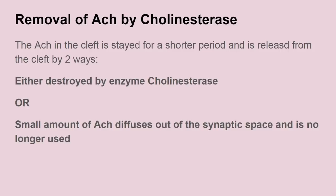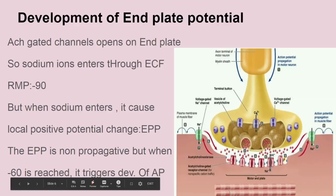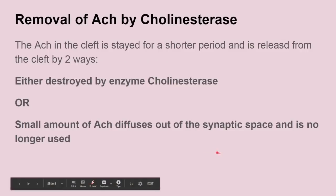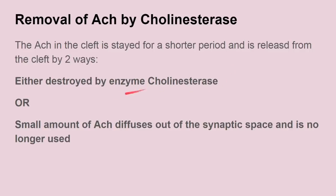The removal of acetylcholine by acetylcholinesterase: the acetylcholine in the cleft remains for a very short period of time, about 1 millisecond only, and is then removed from the synaptic cleft by two ways. Either the acetylcholine is destroyed by the enzyme cholinesterase, which is present in the palisades or junctional folds or subneutral cleft, or a small amount of acetylcholine diffuses out of the synaptic space and is no longer used for muscle contraction. It is very important to know that the rapid removal of acetylcholine from the cleft prevents repeated excitation of the muscle fiber.